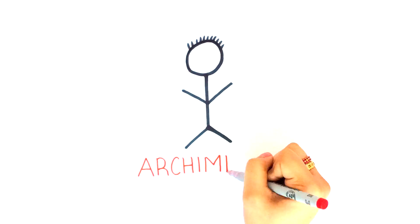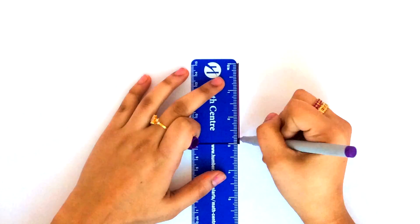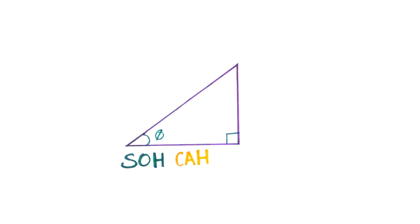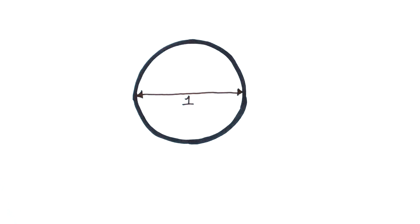We know that Archimedes discovered a primitive approach to determine pi before calculus was invented. He used simple trigonometry to approximate the value of pi. Let's start with the circle of diameter 1, which makes the circumference of the circle equal to pi.